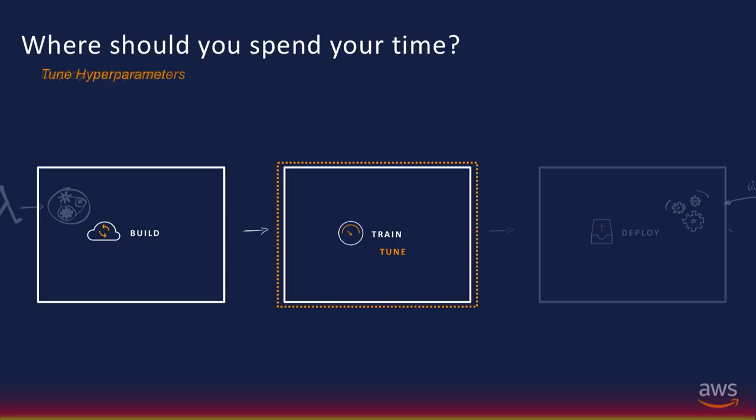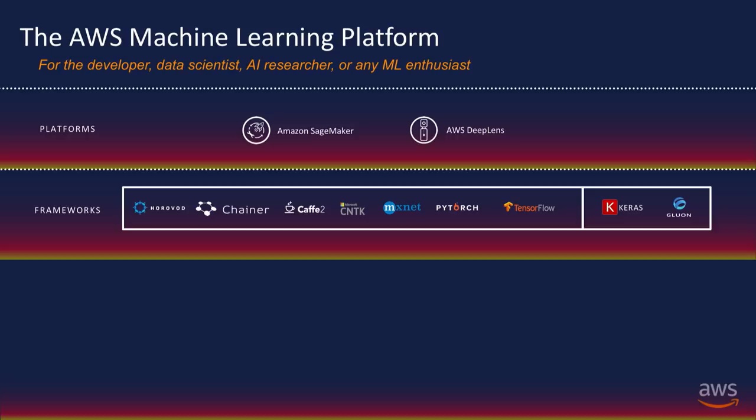The next step is deploying these algorithms in production. What we have for that is Amazon SageMaker — an end-to-end machine learning platform that enables data scientists, developers, AI researchers, practitioners, machine learning learners — everyone — to build, train, tune, and deploy machine learning models at scale.